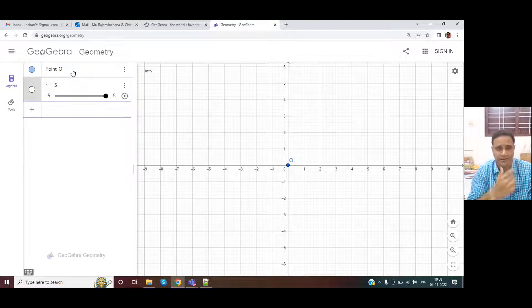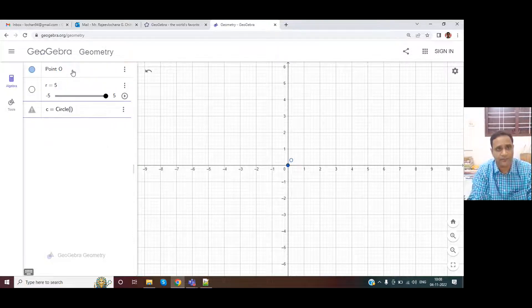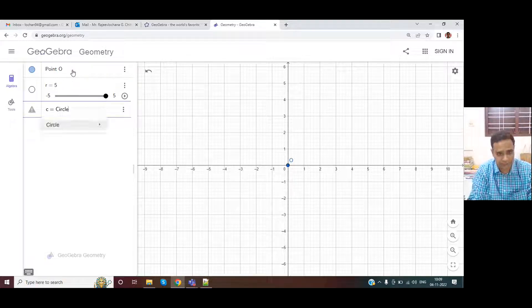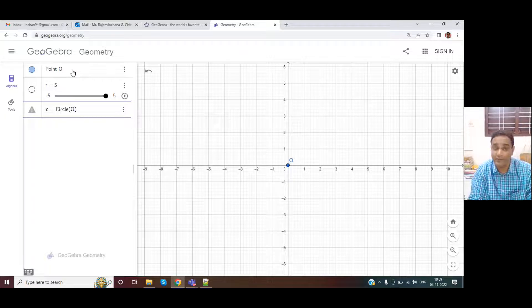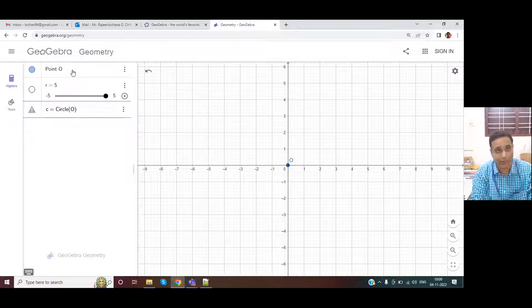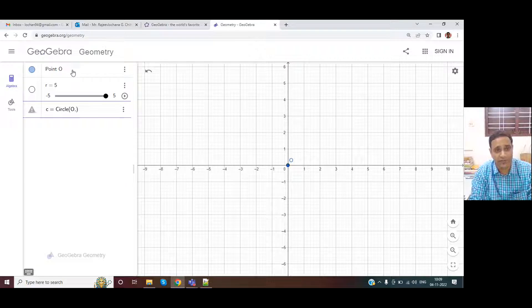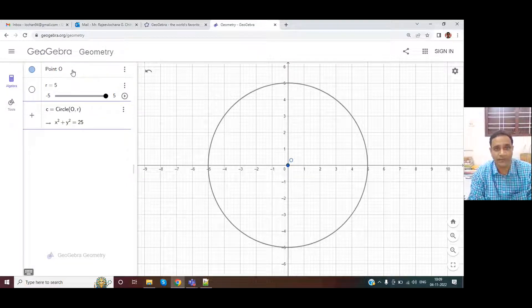It's a scalar value. If I want to draw a circle at point O with radius R, I'll have C equals circle, center capital O. Please remember, some students make a mistake writing 0 instead of capital O. So you have to be mindful of that. C equals circle center comma radius. Instead of giving 5, I can use a parameter radius.